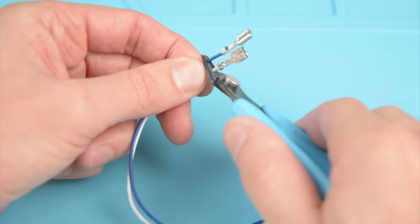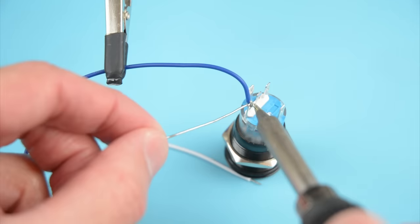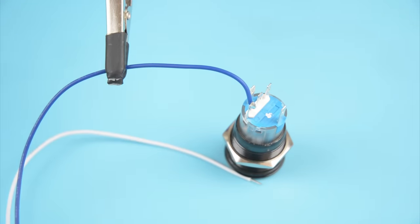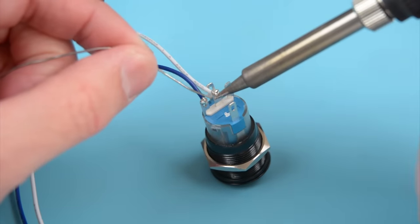Prepare the provided cables by cutting off the metal connections and strip the ends with wire strippers. Place the blue wire onto the terminal marked common and solder together. Then place the white wire onto the terminal marked NO, which stands for normally open, and solder.